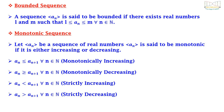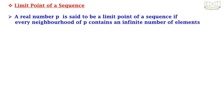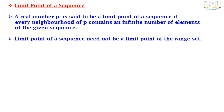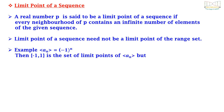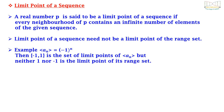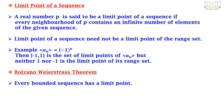Limit point of a sequence: a real number P is said to be a limit point of a sequence if every neighborhood of P contains an infinite number of elements of the given sequence. Note that a limit point of a sequence may not be a limit point of its range set. For example, if a_n = (-1)^n, then {-1, 1} is the set of limit points of {a_n}, but neither 1 nor -1 is a limit point of its range set. We also have the Bolzano-Weierstrass theorem, which states that every bounded sequence has a limit point.